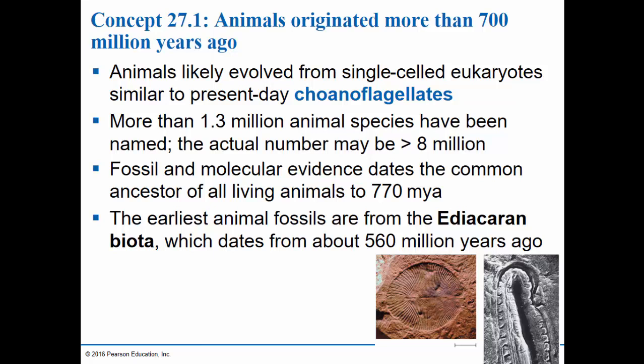Evidence from both fossils and DNA helps us to estimate that the common ancestor of all living animals lived somewhere around 770 million years ago. The earliest fossils that have been discovered so far of animals date back to 560 million years ago. Since we haven't found all of the fossils yet, it's often the case that the ancestor of a particular group lived sometime earlier than the oldest known fossils. The molecular evidence helps us to pinpoint the date more accurately.